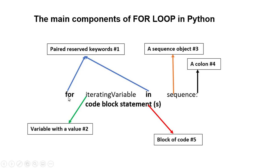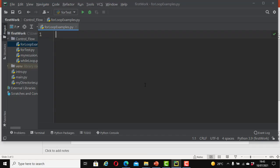With those four components in place we can write our block of code — the code block statements — which is the fifth component. So the five components are: the 'for' keyword, the iterating variable, the 'in' keyword, the sequence, the colon, and the block of code to execute. Now let's actually write some code with a for loop in Python.